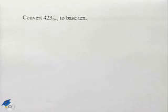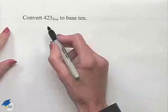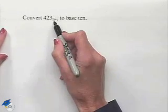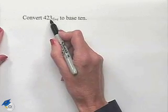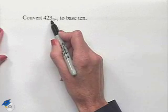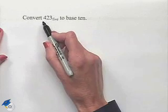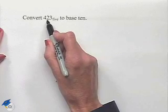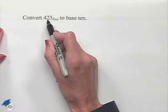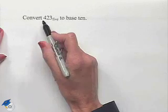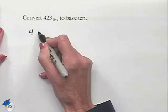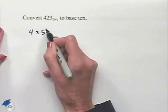In order to do this conversion, we're going to take each digit and see what it represents in base 5. In base 5, as we move over each place, we're looking at a different power of 5. So this would be the 1's place, this would be the 5's place, and this would be the 5 squared place. We're going to take our digit 4 and multiply times 5 squared.